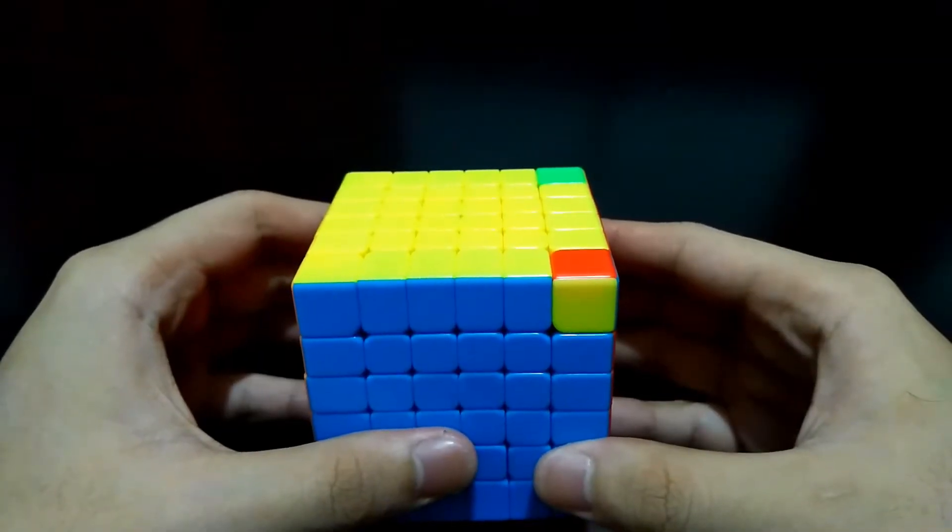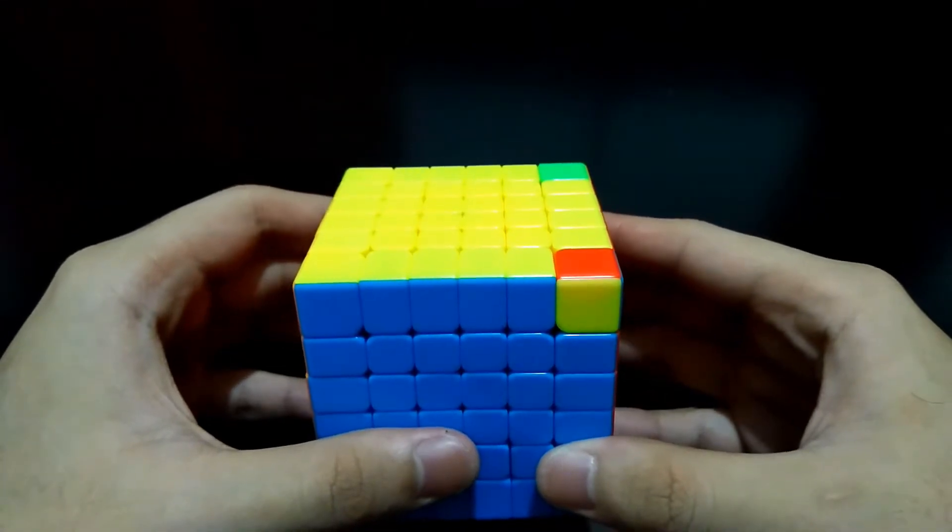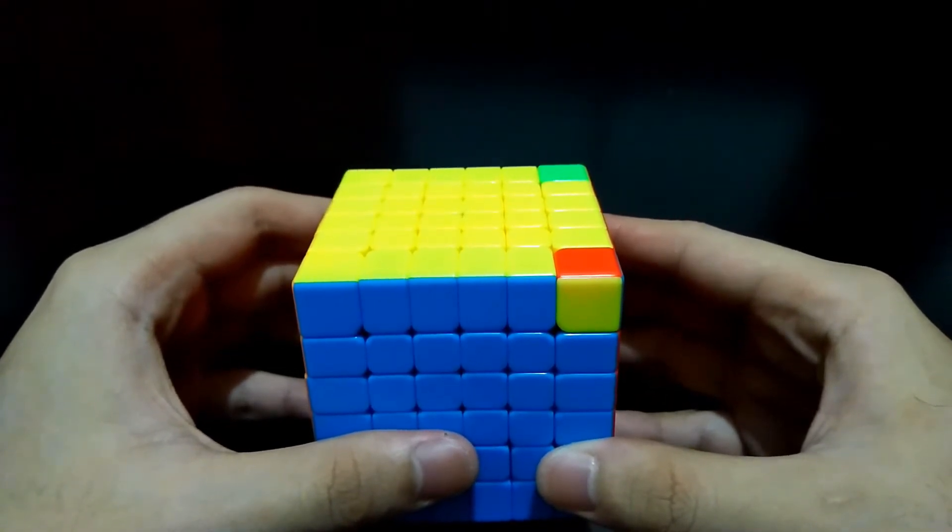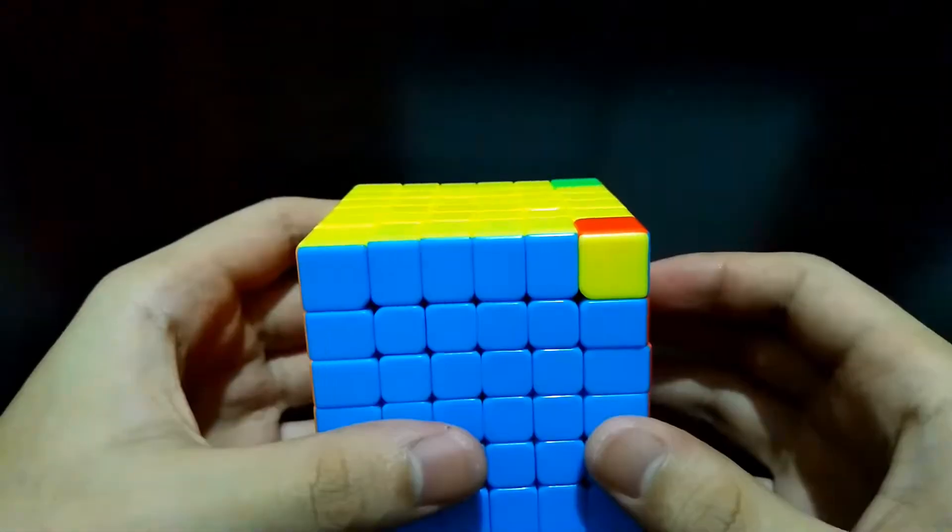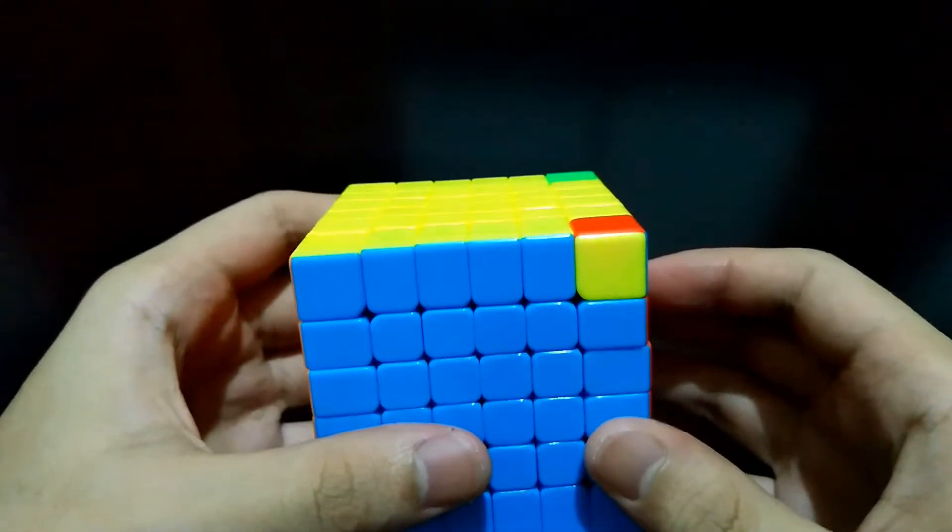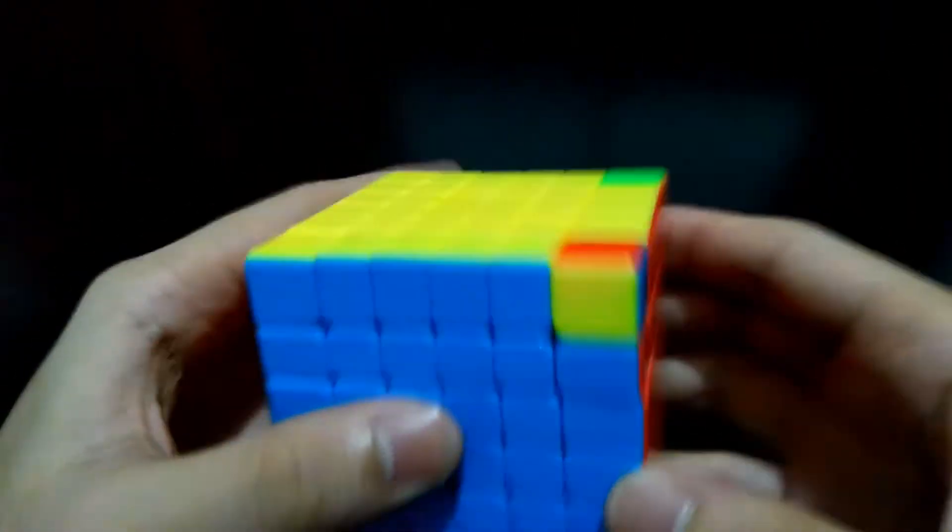Hi guys, I'm the cube solver. Welcome to my parity tutorials. I'm sure that you came here because you are struggling to place this last corners properly. You have two corners already at the right place like this, and the other two are not.